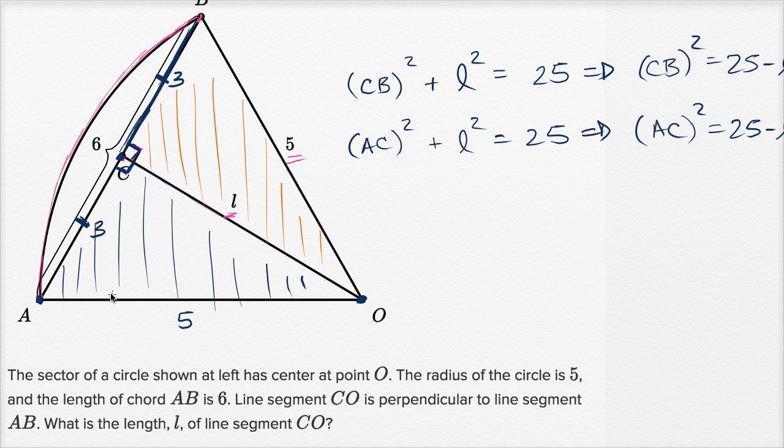Or you could have jumped to it a little bit faster without having to write all this math. You could say, hey look, I have two right triangles. I know that two of their sides are the same, so the third side has to be the same as well. So this is going to be the same as that, and so they're each going to be half of the six.